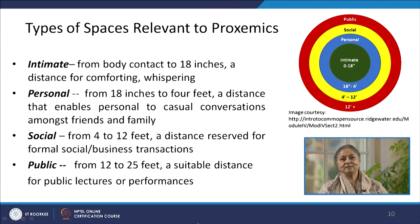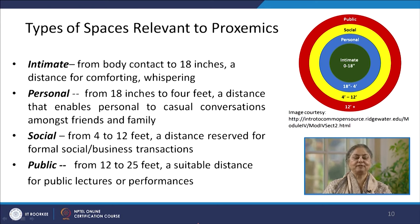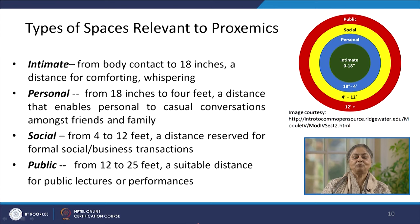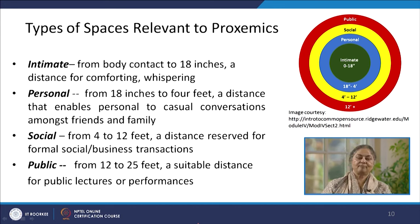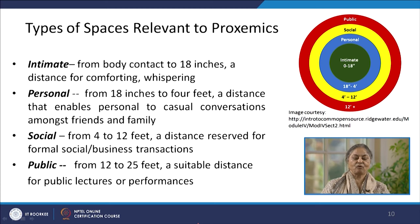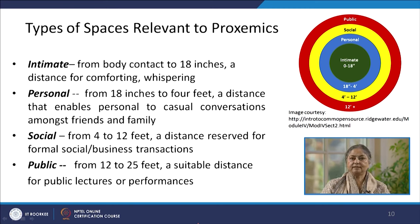The intimate zone is from the closest possible body contact to 18 inches — a distance for comforting and whispering. This is a zone in which we allow only very close people and family members. The personal zone is 18 inches to 4 feet, enabling casual conversations among friends and family, and also maintained for day-to-day work in offices. The social zone is 4 to 12 feet, reserved for formal social and business transactions. The public zone is beyond this, suitable for public lectures and performances. These zones are not strictly compartmentalized — there may be minor variations, but the idea is communicated by roughly keeping the same space.